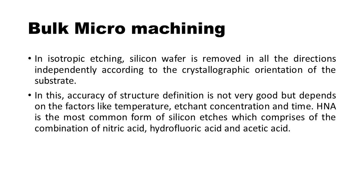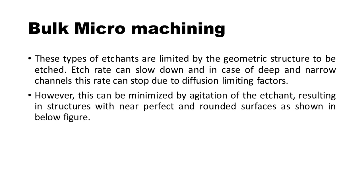HNA is the most common form of silicon etch, comprising a combination of nitric acid, hydrofluoric acid, and acetic acid. These types of etchants are limited by the geometric structure to be etched. Etch rate can slow down, and in the case of deep and narrow channels, this rate can stop due to diffusion limiting factors. However, this can be minimized by agitation of the etchant, resulting in structures with near perfect and rounded surfaces, as shown in the figure below.